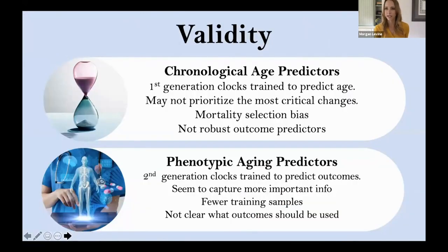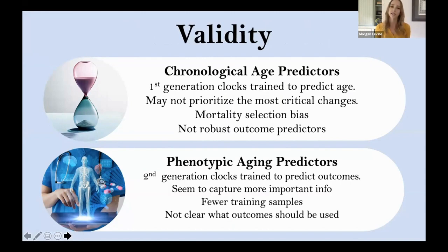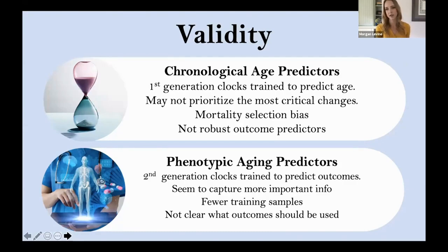Starting with validity — what does this mean? One big issue in actually developing biomarkers of aging is that aging is a latent concept. It's actually something we can't observe, and so anything we do is not going to have a ground truth against which we can evaluate it. These first generation clocks, and a lot of biomarkers of aging even beyond those developed using DNA methylation, are developed as what we call chronological age predictors. You get thousands to potentially hundreds of thousands of variables and apply machine learning or deep learning techniques to see if you can actually predict the chronological age of a sample.